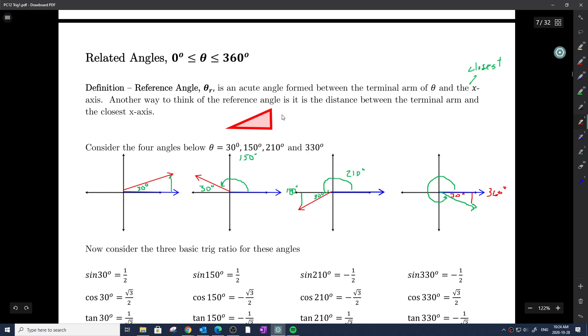Let's look at this definition again. The reference angle theta r is the acute angle formed between the terminal arm of theta, the red one, generally how I've drawn it in quadrant 1, 2, and 3 respectively, and the closest x-axis. Another way to think about the reference angle is the distance between the terminal arm and the closest x-axis.